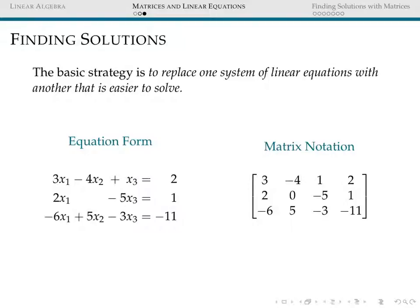Our basic goal is to take one system of linear equations and replace it with one that's easier to solve. At each stage in the algorithm, we're going to take a system of linear equations and replace it with one that's ever so slightly easier for us to read off solutions, until our final linear system — which will be equivalent to the first — contains exactly what the values of x1, x2, and x3 would have to be to satisfy all three equations. On the left-hand side of every slide you'll see the equations written out, and on the right we'll keep track of the matrix notation and the elementary row operations.